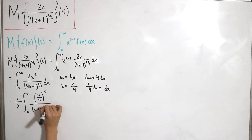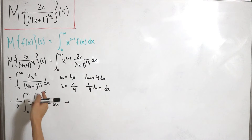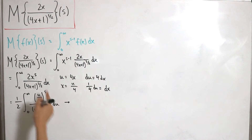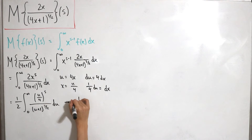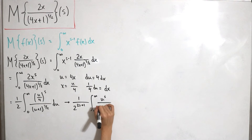Simplifying further, distributing the exponent s over the factor of 4 — which is a constant — that factor can be pulled outside. This can be written as 1 divided by 2 to the power (2s + 1), times the integral from zero to infinity of u to the power s divided by (u + 1) to the power 3/2, du.